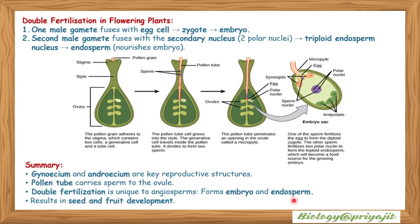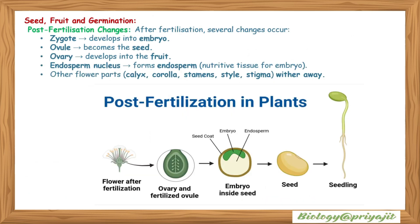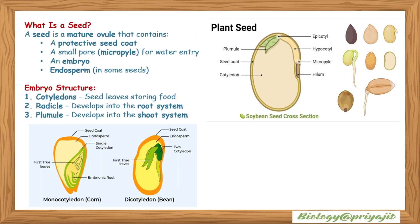Summary: androecium and gynoecium are key reproductive structures; the pollen tube carries sperm to the ovule; double fertilization forms the embryo and endosperm; it results in seed and fruit development. Post-fertilization changes: the zygote develops into an embryo; the ovule becomes the seed; the ovary develops into the fruit; and the endosperm nucleus forms the endosperm — a nutritive tissue for the embryo. Other floral parts like calyx, corolla, stamen, style, and stigma wither away.